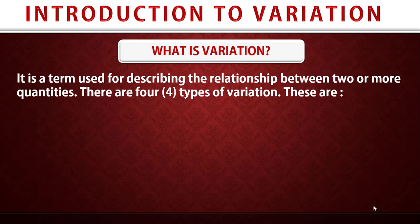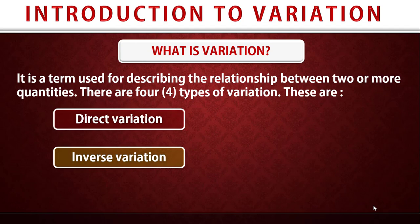between two or more quantities. There are four types of variation. These variations are direct variation, inverse variation, joint variation, and partial variation.